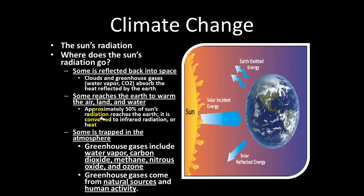Some of it, though, is trapped in the atmosphere by greenhouse gases like water vapor, carbon dioxide, methane, nitrous oxide, and ozone. These are all called greenhouse gases, and they come from natural sources and from human activity. We'll discuss a lot of the human activity that causes greenhouse gases today.